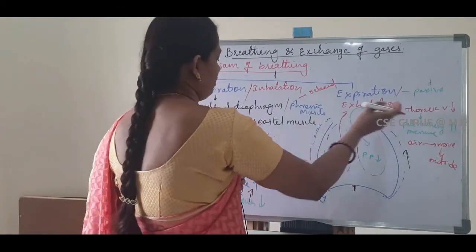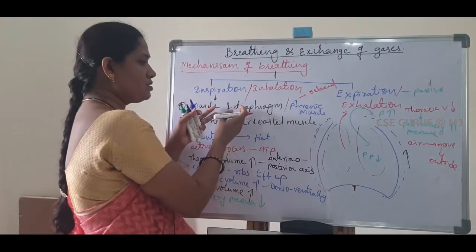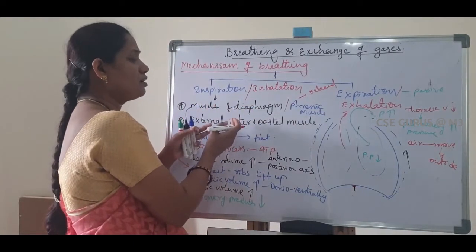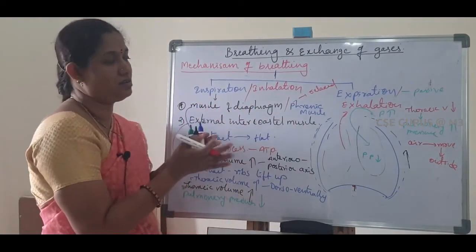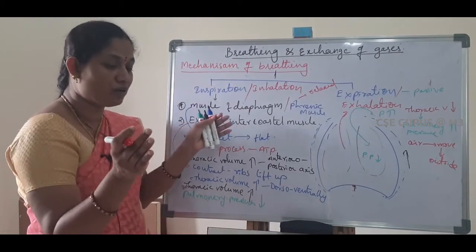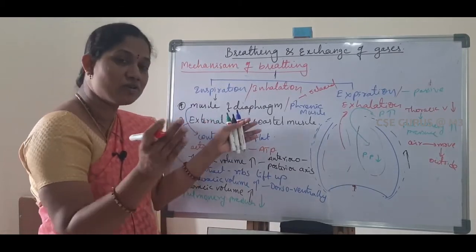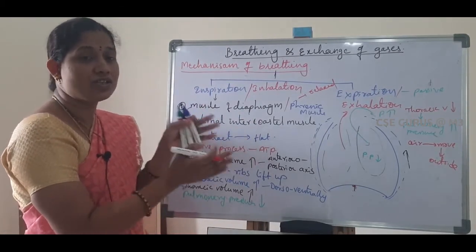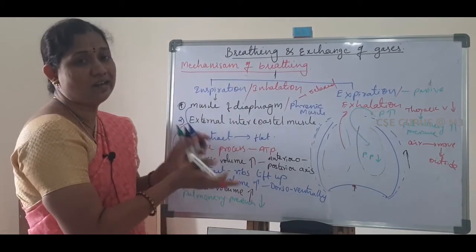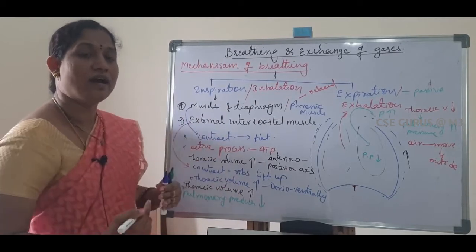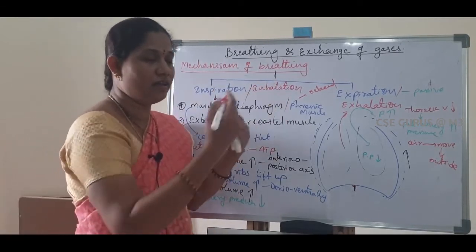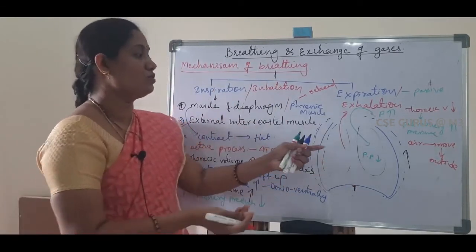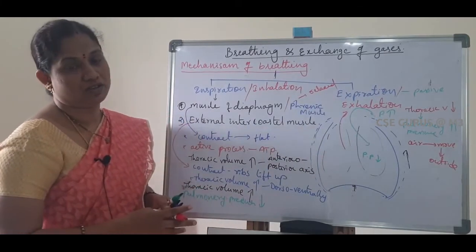In expiration, first the diaphragm muscles relax, then the external intercostal muscles relax. As a result the thoracic volume decreases, pressure in the lungs increases, and air moves outside — that process is called expiration.